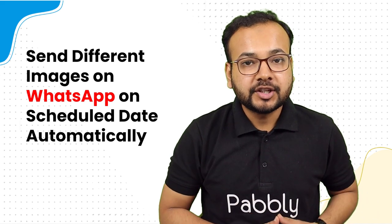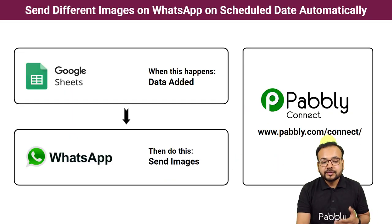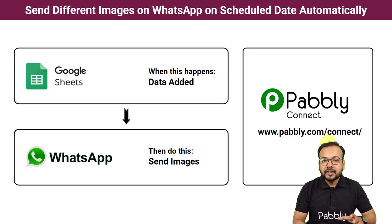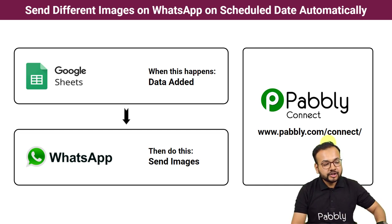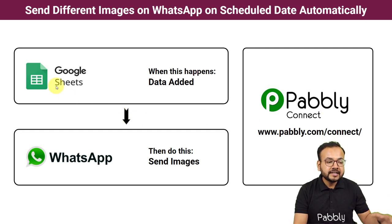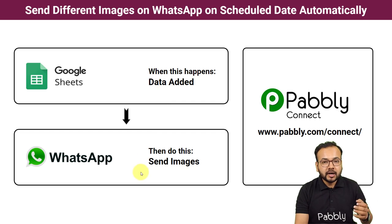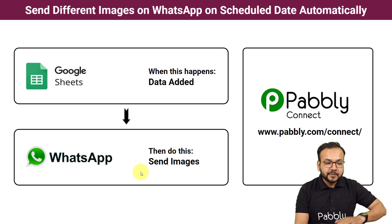To set up this automation we are using Pabbly Connect, which is an integration and automation tool. The best part is you can set up this automation without any coding skills or programming knowledge. This will be the flow of this automation: we are using Google Sheets to enter the data of the students and the results, and we are going to send the results in image format to the WhatsApp accounts of the students on a scheduled date automatically.